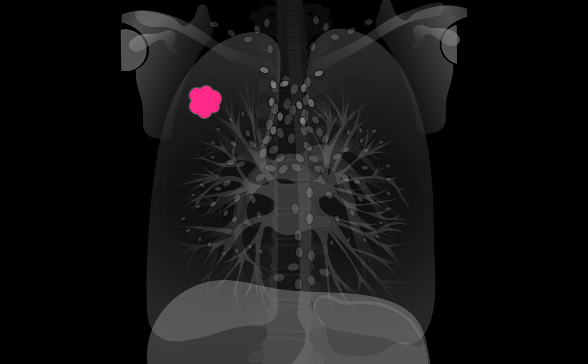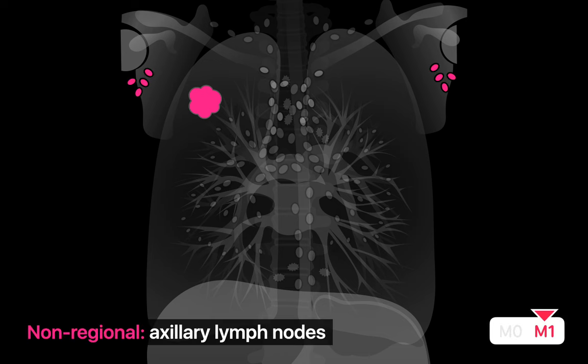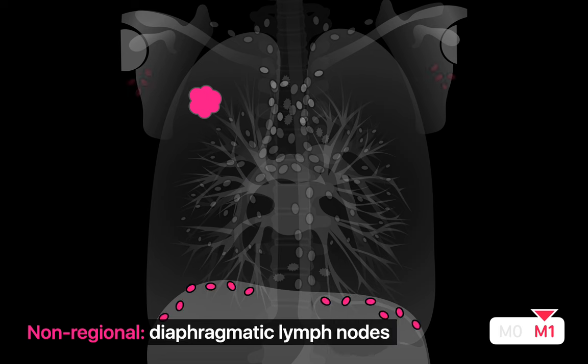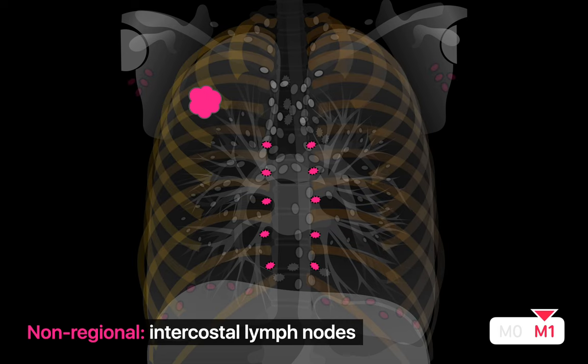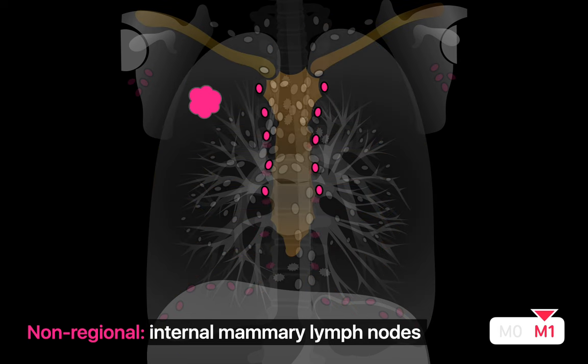Spread of lung cancer to other lymph nodes beyond this direct lymphatic watershed are treated as distant metastases. For example, lung cancer spread to axillary lymph nodes is M1, as would spread to diaphragmatic lymph nodes, intercostal nodes near the costovertebral junctions, and internal mammary nodes in the anterior chest.